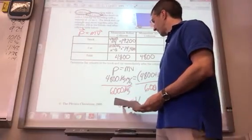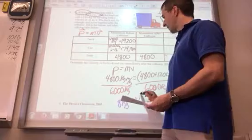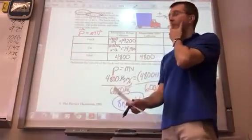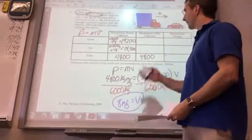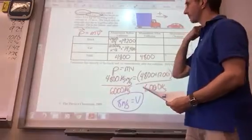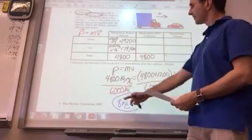And we're left with the speed of 0.8 meters per second, right? So the truck slowed down obviously, right, when it hits something it's going to slow down. The car actually speeds up in the opposite direction.